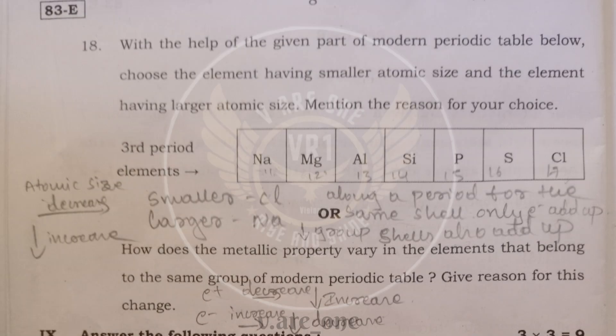18th question, they have given atomic size and they have arranged the elements. In this third period of elements, according to this periodic table, in a third period, sodium having a larger atomic size and chlorine having smaller atomic size because atomic size along a period decreases and down a group increases. Along a period decreases because for the same shell, only electrons will add up. In down a group, it will increase because shells will also get added.